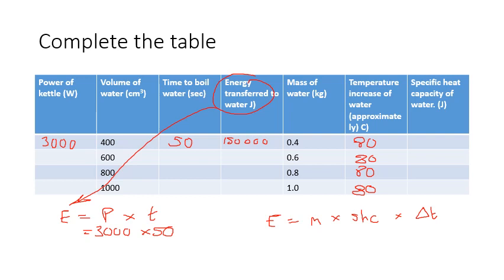I'm going to put my energy into this equation now. So this is the energy that I've transferred, which is 150,000 joules, and that's going to equal my mass of the water, which is 0.4, multiplied by specific heat capacity—that's what we're trying to find out, so I'm going to put that down as x—and then I'm going to times that by 80, which is my temperature change.